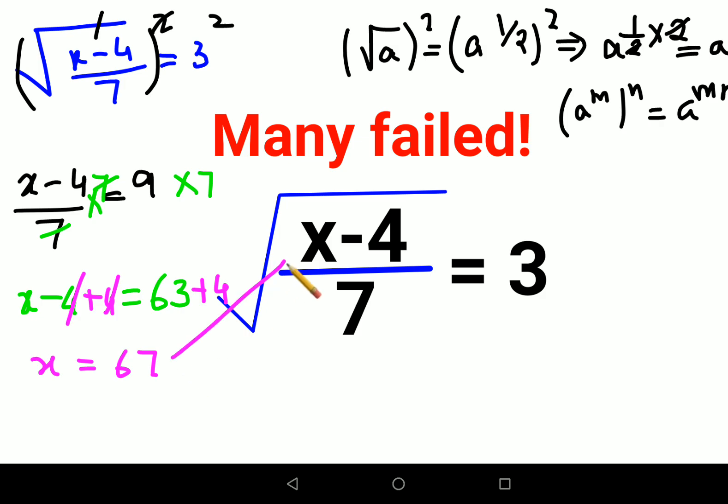So see, x-4, that is 67-4 divided by 7, gives you 63 divided by 7, which is 9. Since everything is under a root, the root of 9 gives you 3.